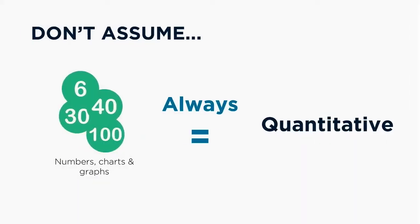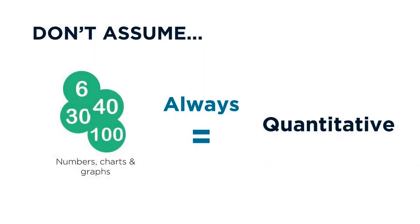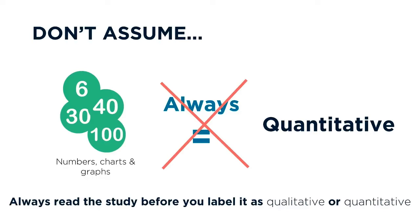While you'll probably see more numbers, charts, and graphs in a quantitative study, be careful — just because you see these doesn't automatically mean the study is quantitative. Qualitative studies might report basic demographic information numerically before diving into qualitative analysis, so it's always important to read the study for additional information.